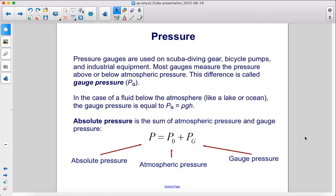Pressure gauges are used on scuba diving gear, bicycle pumps, and industrial equipment. Most gauges measure the pressure above or below atmospheric pressure. This difference is called gauge pressure, or P sub G.